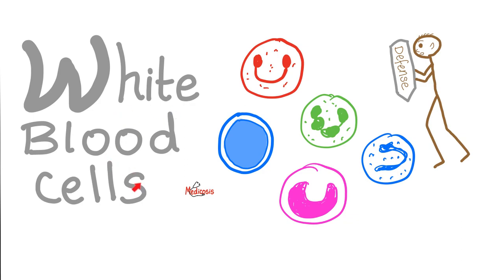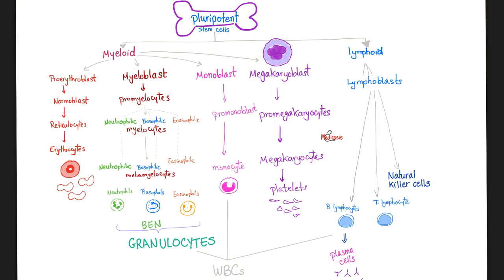Quick review on white blood cells or leukocytes. This is your neutrophil, eosinophil, basophil, monocyte, lymphocyte. All of your blood cells come from the bone marrow. Neutrophils, basophils, and eosinophils are collectively known as granulocytes because they have granules. Basophils have basophilic granules, which are blue. Eosinophils have eosinophilic granules, which are pink. Neutrophils have neutral granules. That's why we gave them these names — neutral, basophilic, eosinophilic. Collectively, these are the granulocytes.